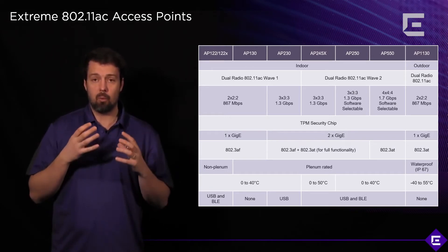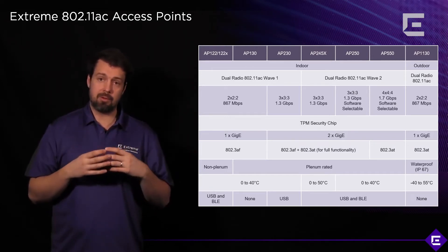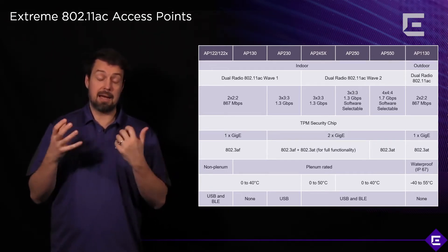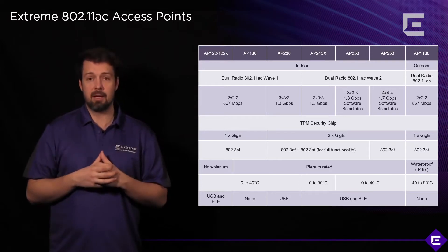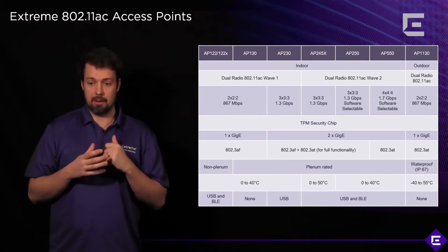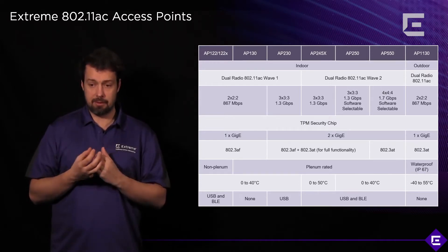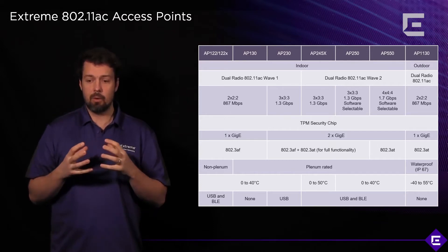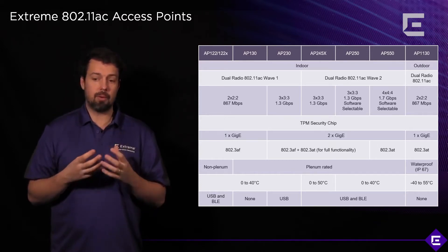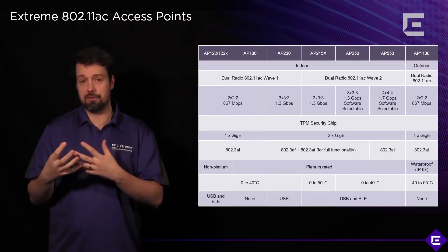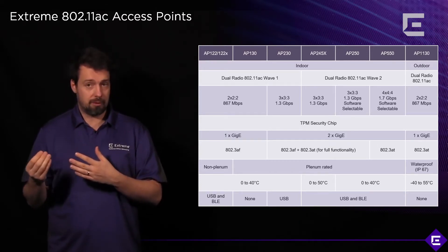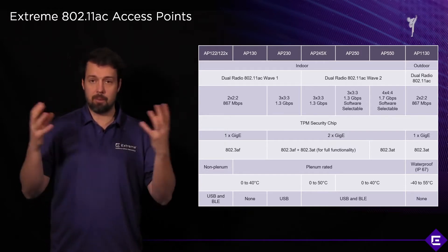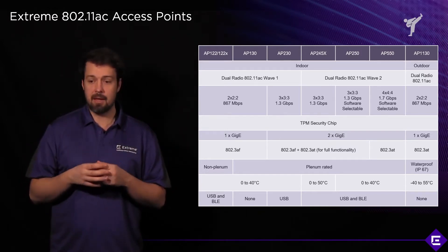We'll talk about how you can use that in high density networks in the course itself. Then we have the AP550, which is the 4x4 through 4 — again software selectable dual 5 GHz radio — top of the range for indoor devices.